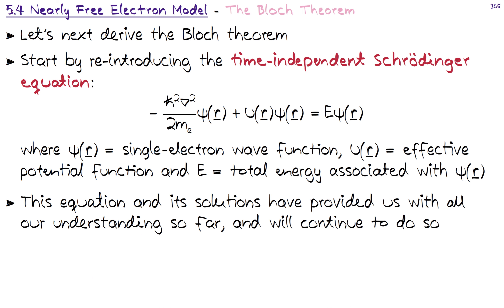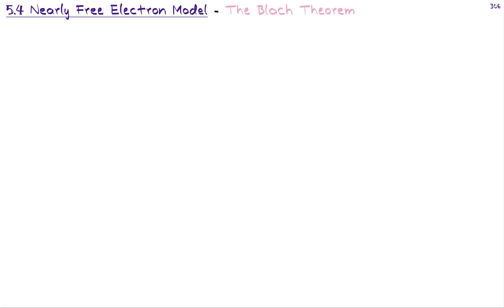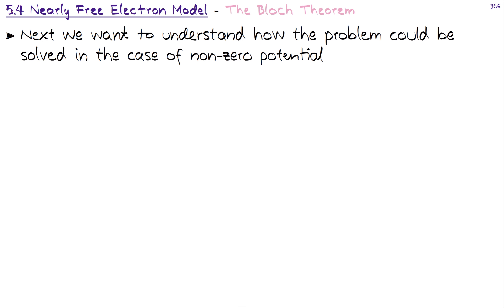Many times in quantum mechanics and in solid state physics, things boil down to solving a Schrödinger equation. Many times also in fiber optics, it boils down to solving the generalized nonlinear Schrödinger equation — but more on that in the course on nonlinear optics. Next we want to understand how we can solve the problem when we have a non-zero periodic potential U that is periodic and non-zero.